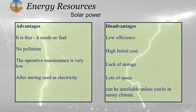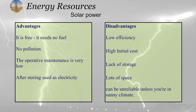The disadvantages include low efficiency, high initial cost, and lack of storage — since sunlight is not available at night, energy must be stored in batteries, which are not very efficient. Solar energy also requires a large amount of space to collect radiation, and it can be unreliable in climates that are not consistently sunny.